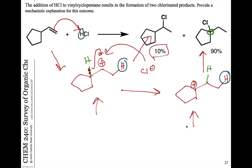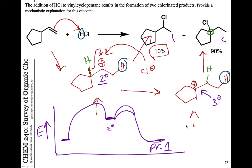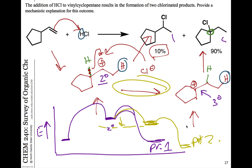Here's the energy diagram to illustrate this: we start with starting materials, go up to the secondary carbocation intermediate, which can react directly to form product one. In order to get product two, a rearrangement occurs to give a more stable intermediate — we've gone downhill in energy to the tertiary carbocation, and that gives product two. The only reason this happens is if the carbocation can rearrange from less stable to more stable — it will. If it's not becoming more stable, you won't see that rearrangement occur.